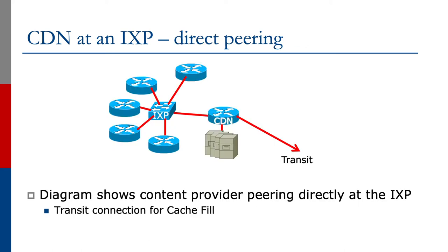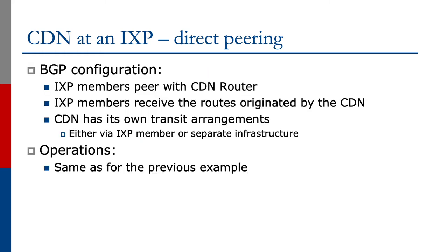The next example is where the CDN is a member of the Internet Exchange Point. The CDN router will connect directly to the IXP and will peer with all members of the Exchange. The CDN will have its own separate transit connection for the cache fill. The BGP configuration is just like any other Exchange Point member: the CDN will peer with all the IXP members, IXP members will receive the routes originated by the CDN, and the CDN has its own transit arrangements via the IXP member or separate infrastructure. Operations are the same as for the previous example.